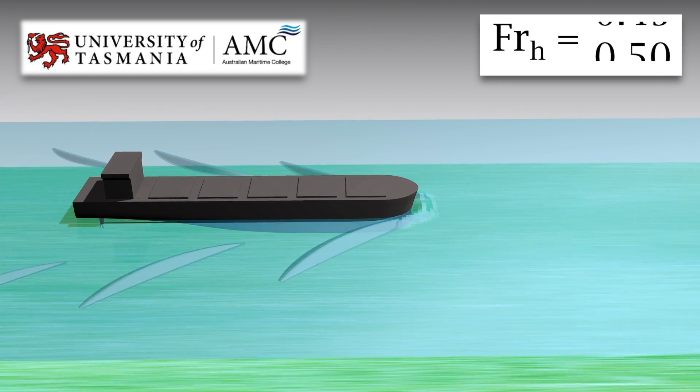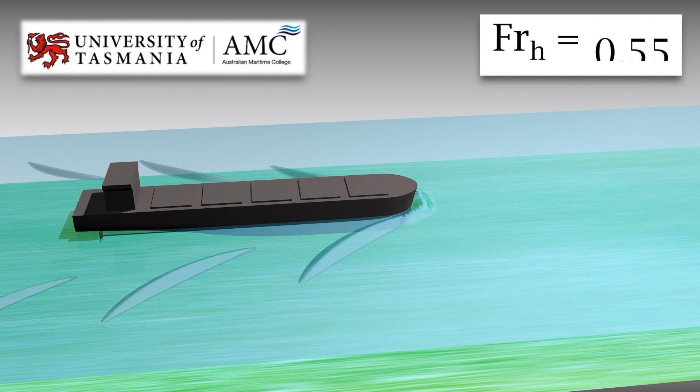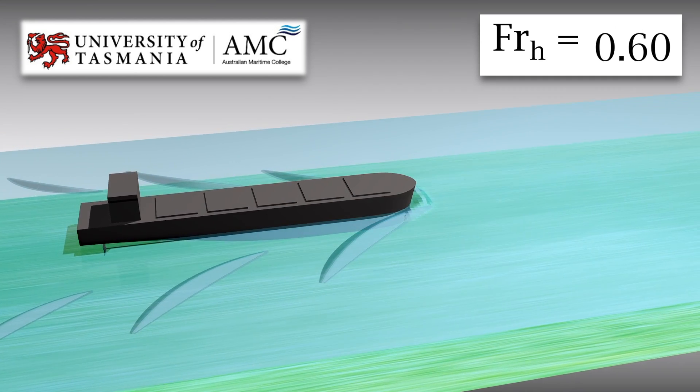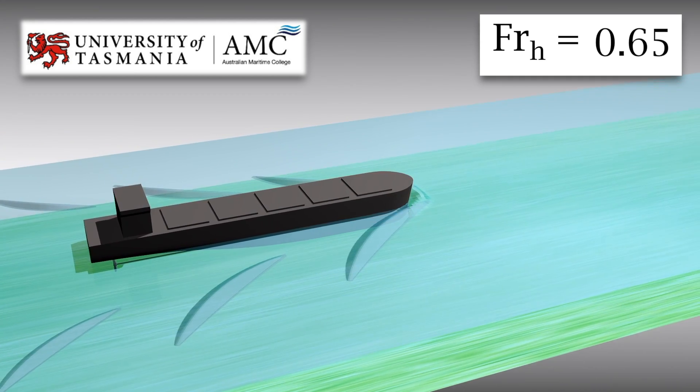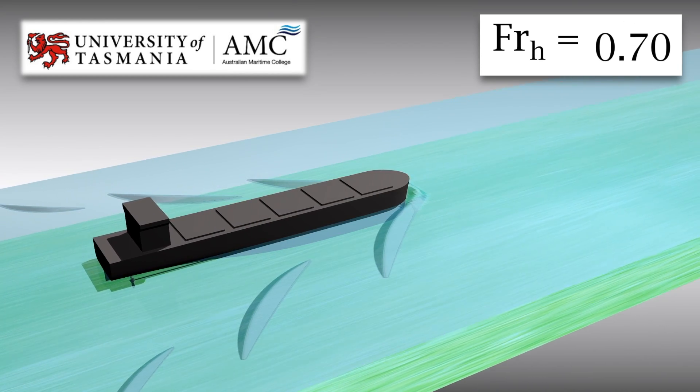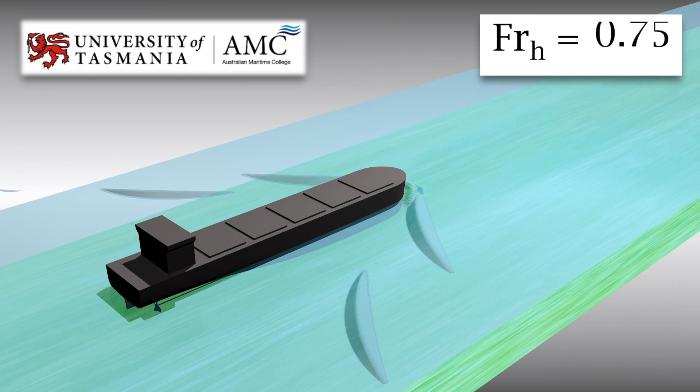Vessels that operate in the supercritical region, however, must pass through the transcritical and critical regions. And when a Froude depth of 0.7 is exceeded, the wake begins to diverge away from the vessel.